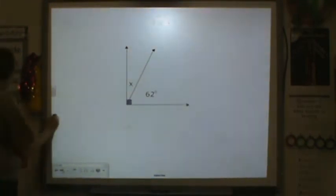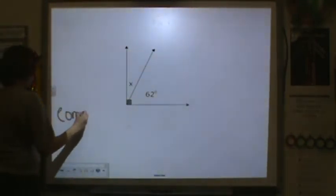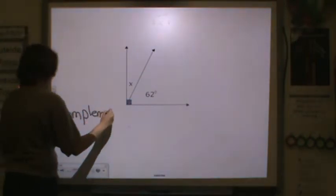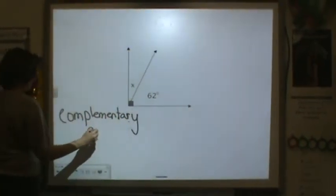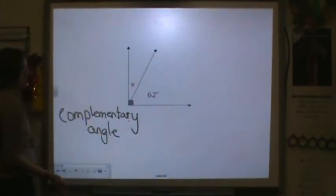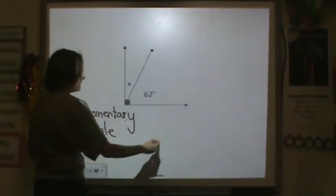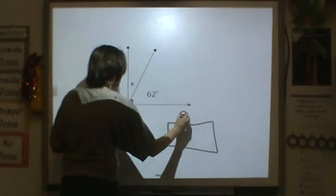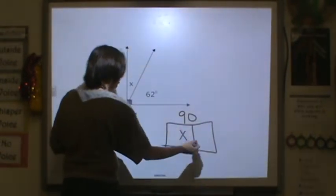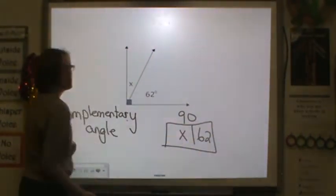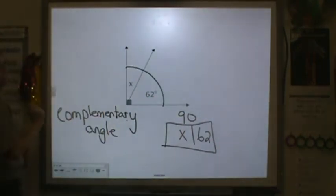Now let's look at complementary angles. A complementary angle is equal to 90 degrees. So the total here is 90. So we have two parts. We have x and 62 that get me the total amount, which is 90.